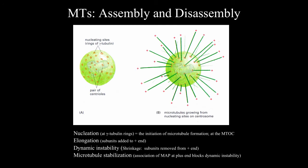Microtubules exhibit dynamic instability — as tubules shrink, dimers are also removed from the plus end. Microtubule stabilization occurs when microtubule-associated proteins associate at the plus end, blocking dynamic instability and making the structure more stable. The natural state for microtubules is rapid polymerization and depolymerization, and this instability must be stabilized by microtubule-associated proteins to produce permanent structures.